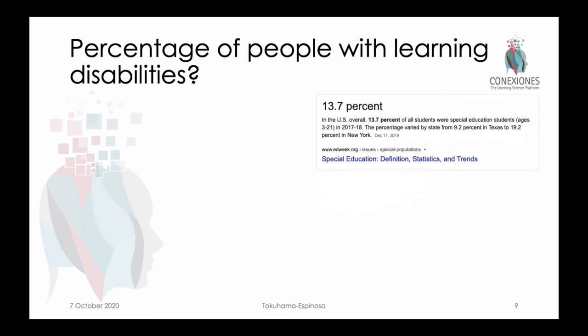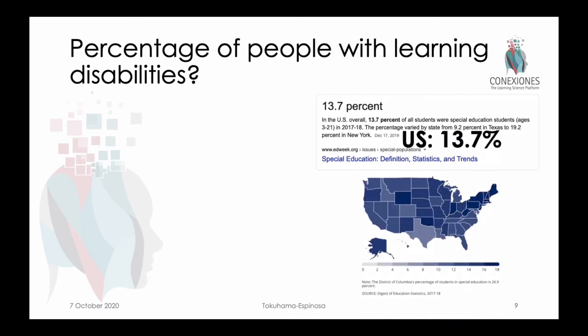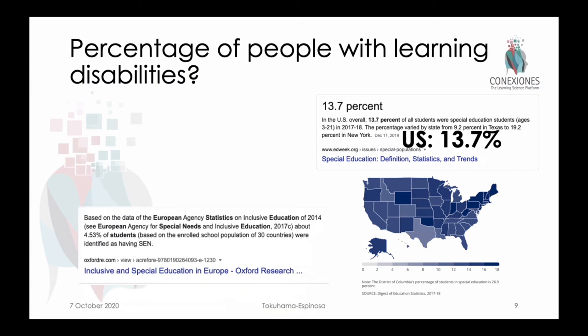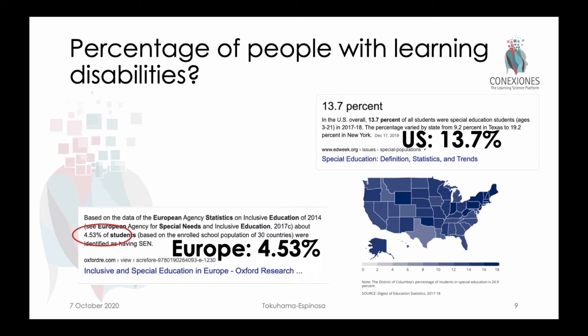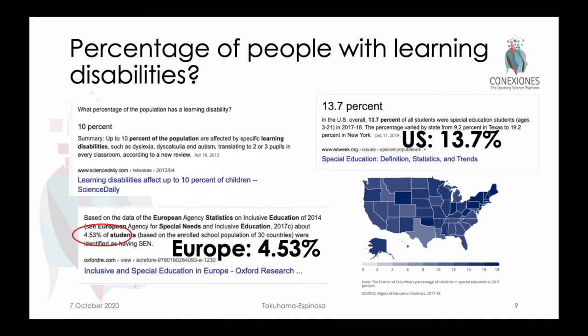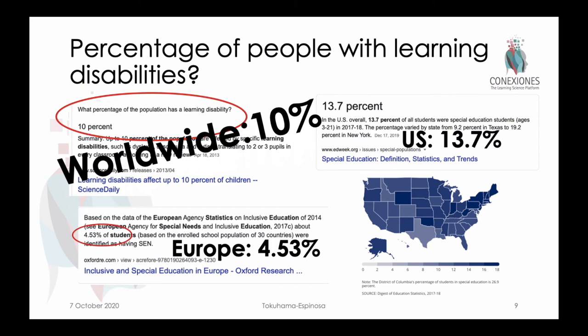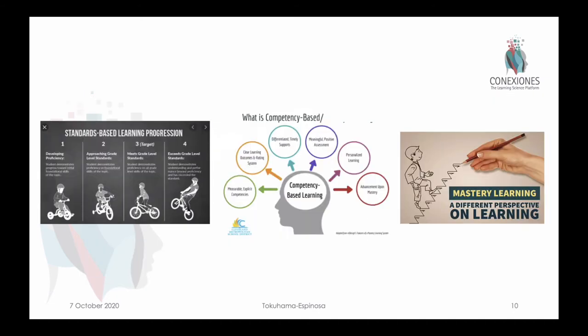From the perspective of learning difficulties, why did Bloom believe 90% of kids in any given classroom would be able to achieve? If you look at learning difficulties around the world, in the United States it's 13.7%, though that figure is inflated in some states where extra funding is tied to special needs identification. In Europe it's very low — only about 4.53%. The worldwide average, according to Science Daily, is basically 10% of the world has a problem that would prevent them from learning grade-level knowledge within a reasonable time. This justifies Bloom's concept that 90% of kids should be able to master all concepts being taught, if and when they have the time they need.